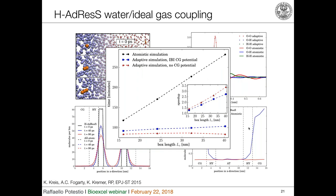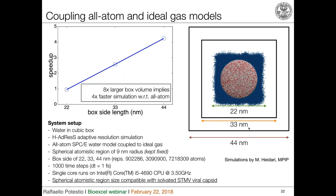The speed-up scales linearly: increasing the size of the simulation box while keeping the atomistic region fixed means the computational cost is completely dominated by the atomistic and hybrid region. In an extreme case, you can simulate a very large box — with hundreds of thousands of molecules, corresponding in size to an entire virus completely solvated — at the cost of only the atomistic plus hybrid region. The speed-up increases with the simulation box size while the atomistic region remains fixed.